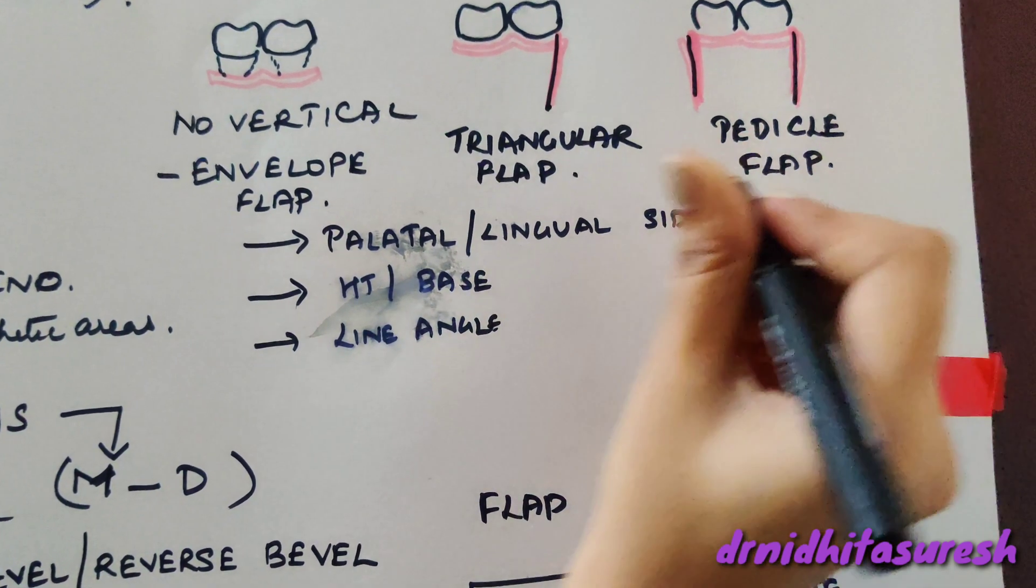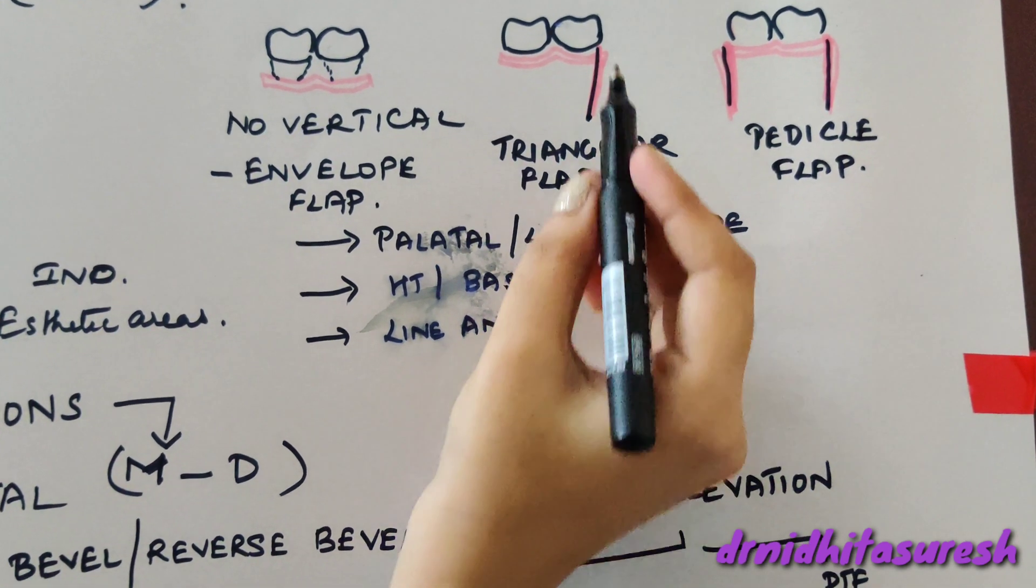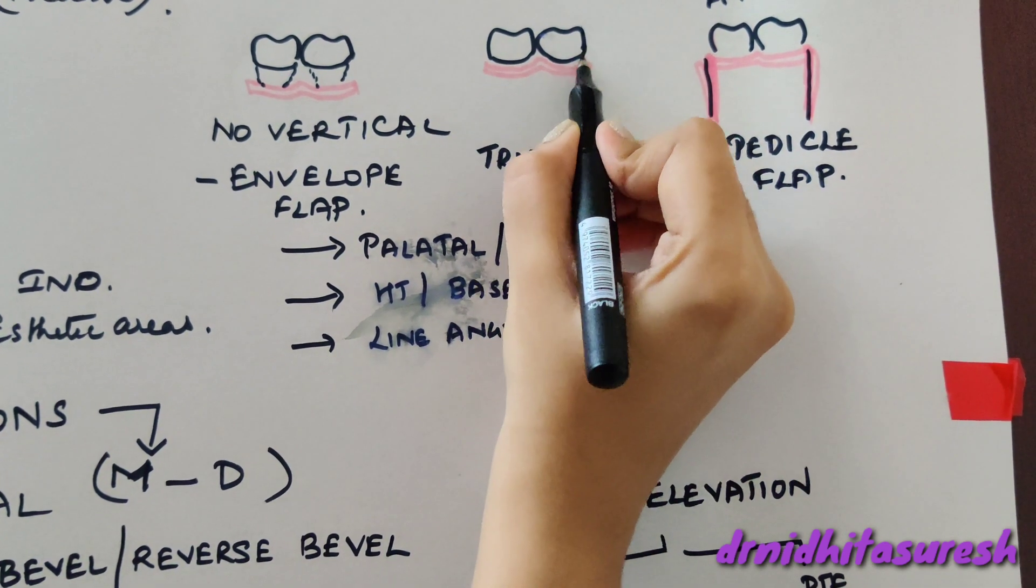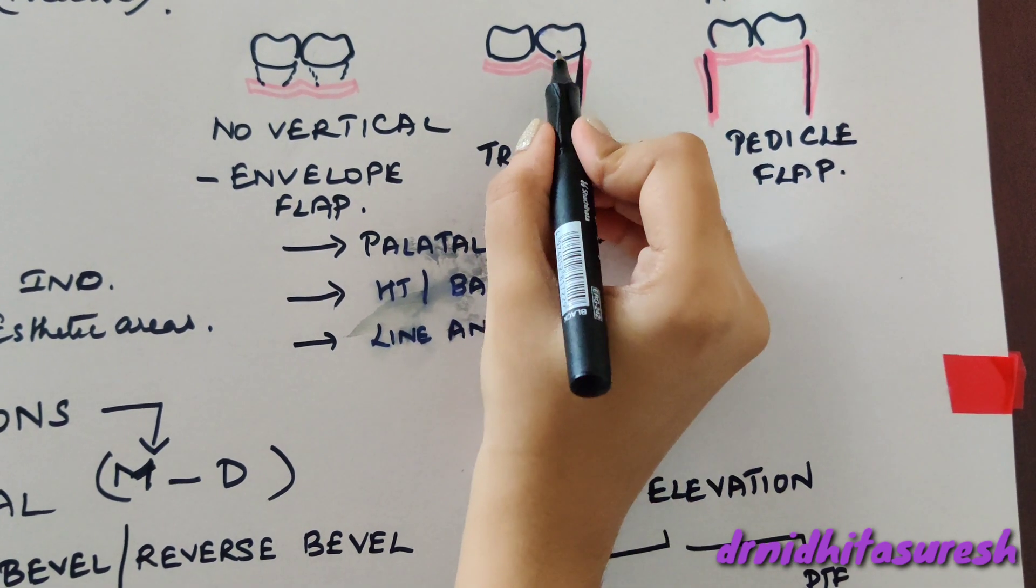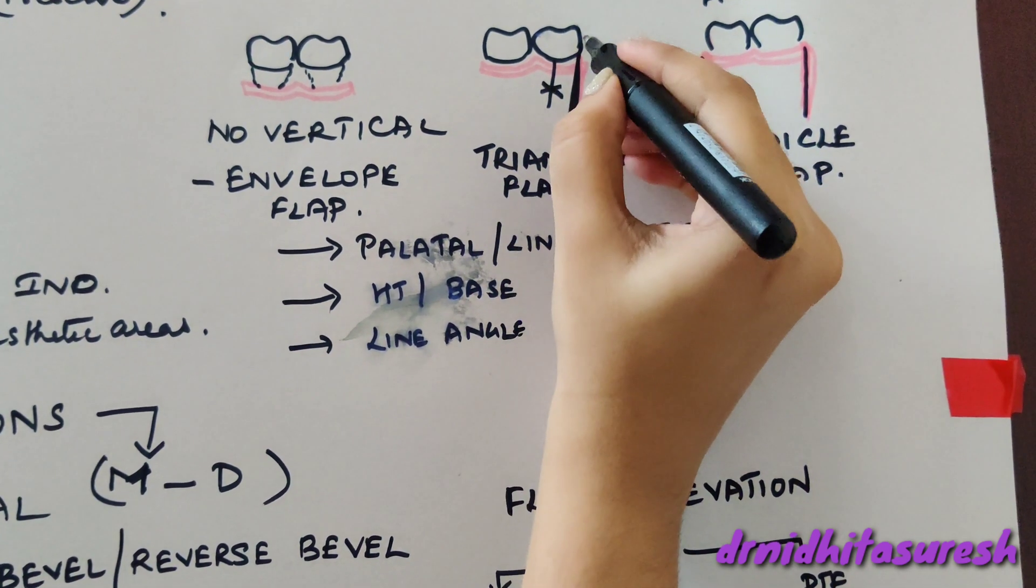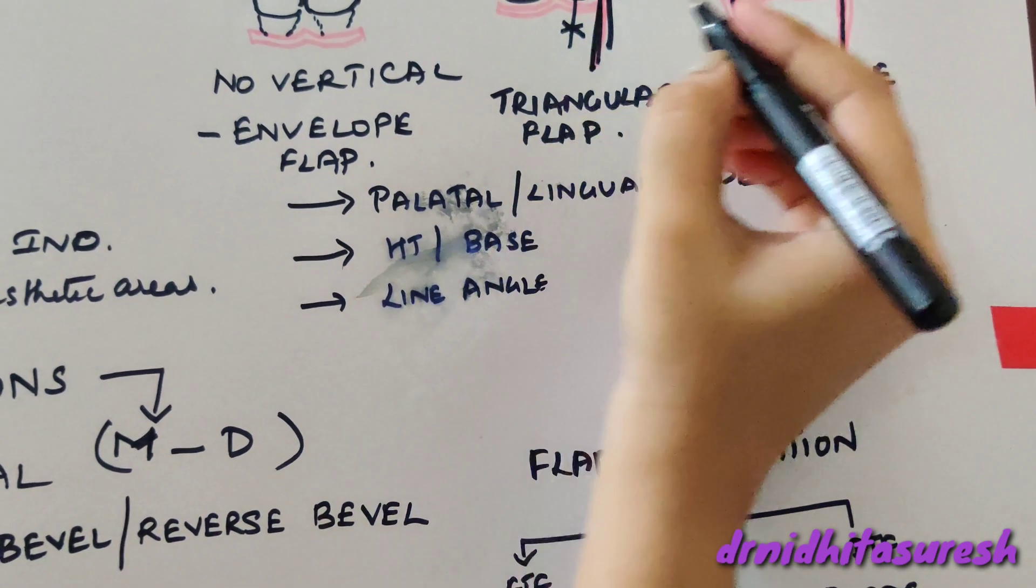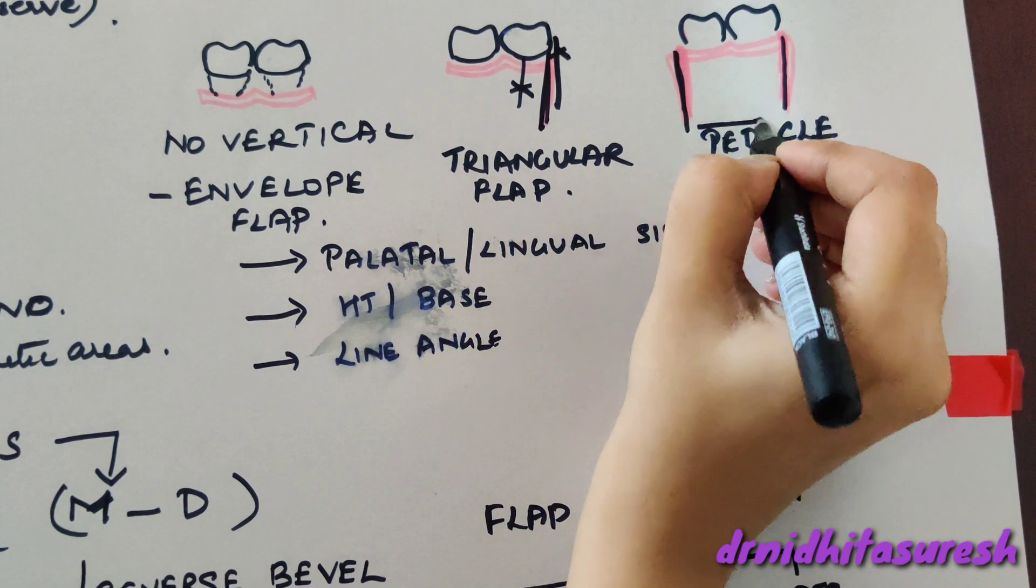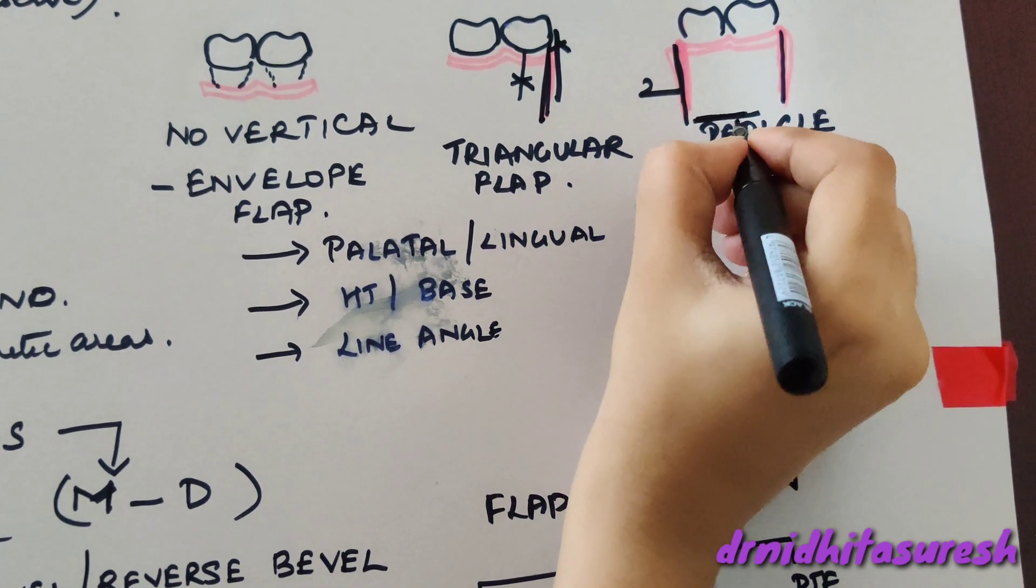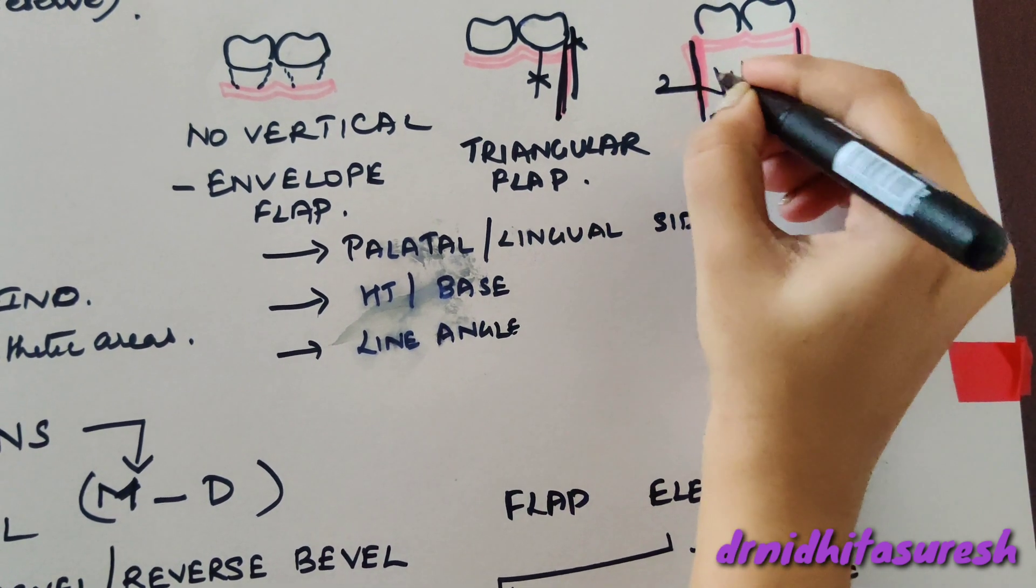Vertical incisions cannot be given in palatal and lingual sides, and the vertical incision should be given at the line angle of the tooth. It should not be given in the radicular area or interdental area. Also, the height to base ratio should not exceed two to one because this could jeopardize the blood supply.